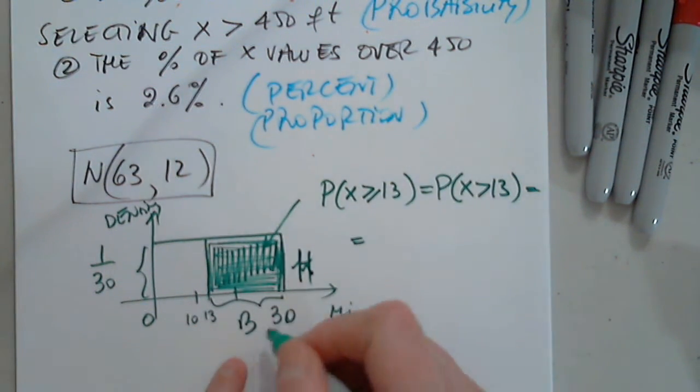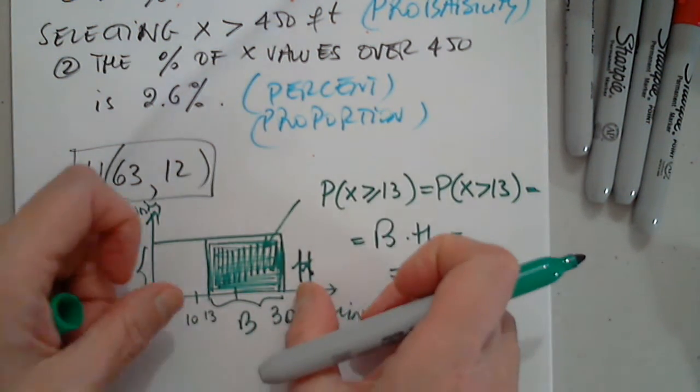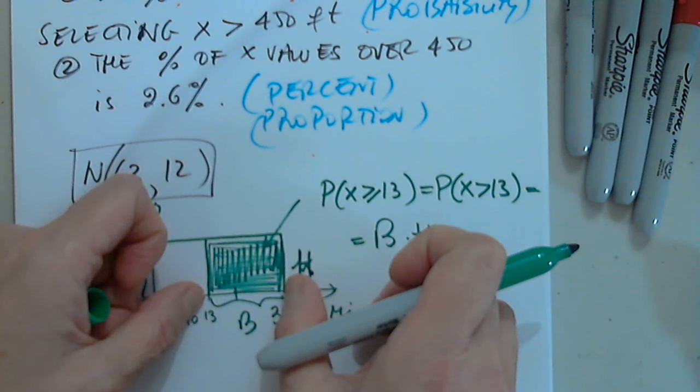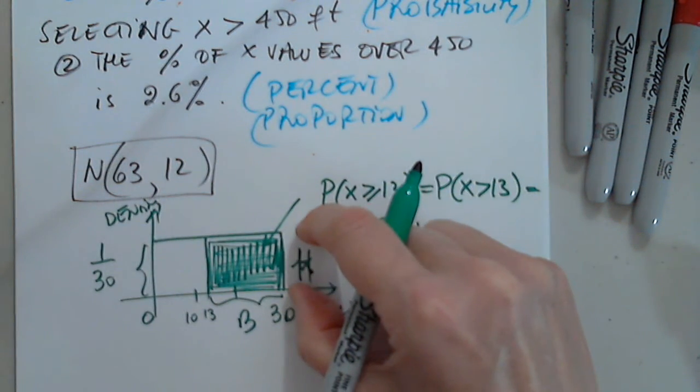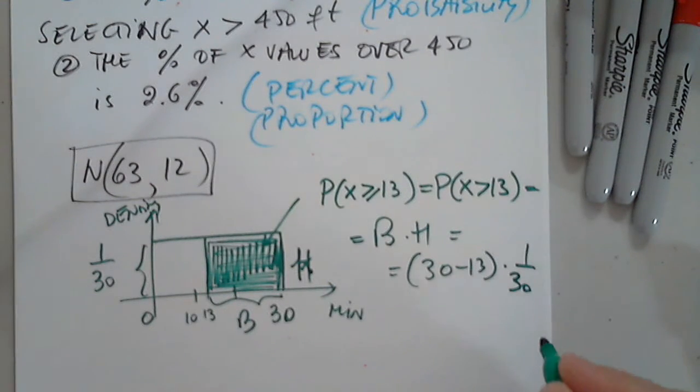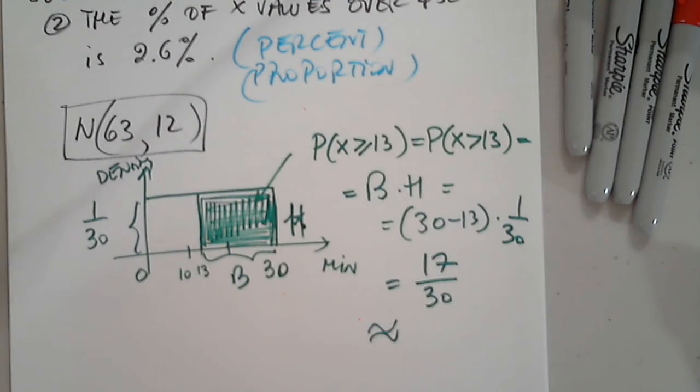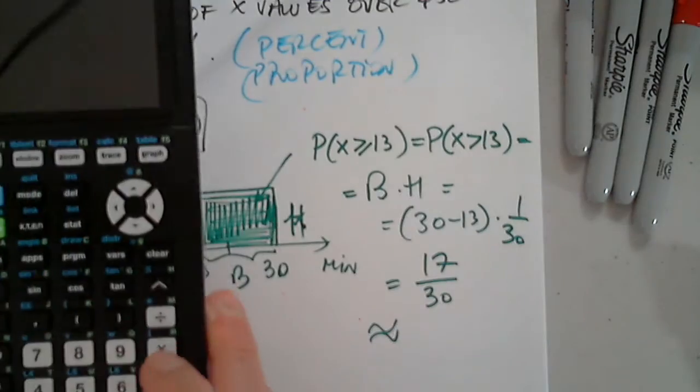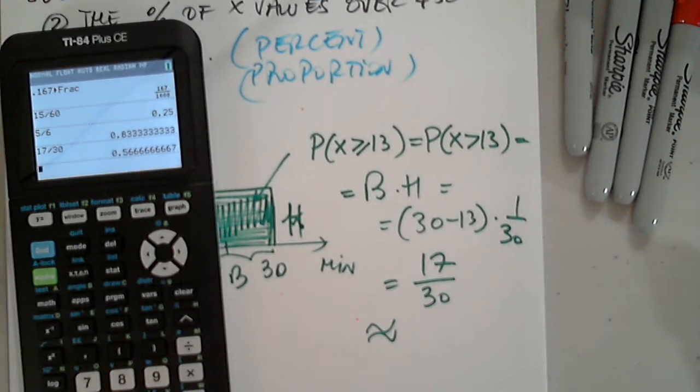This is base times height. Let me use uppercase. So it's base times height. The base is, can anyone give us this base? How much? 17. Right. So the base is indeed 30 minus 13. And what is the height? 1 over 30. 1 over 30. So as you said, 17 divided by 30.